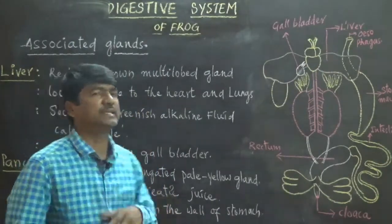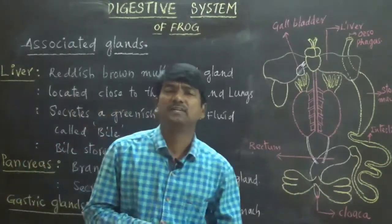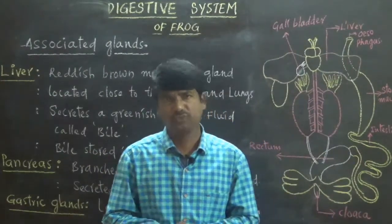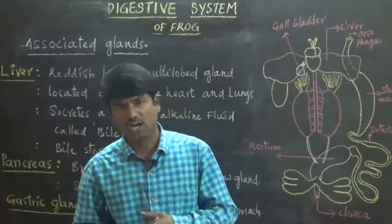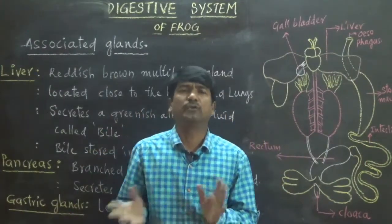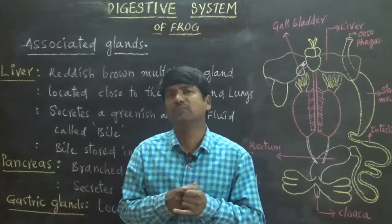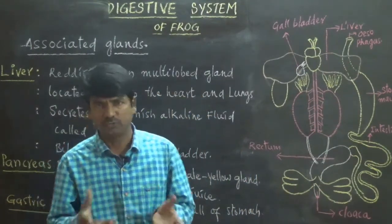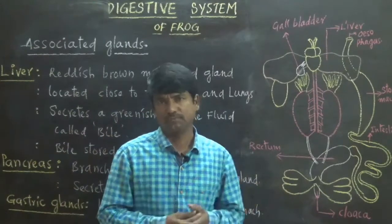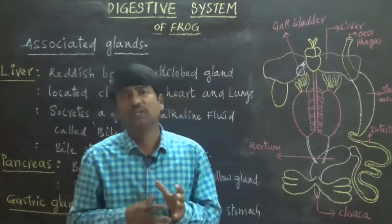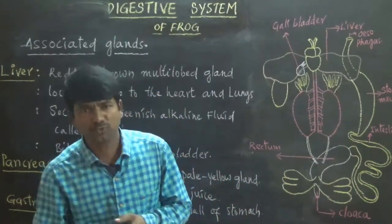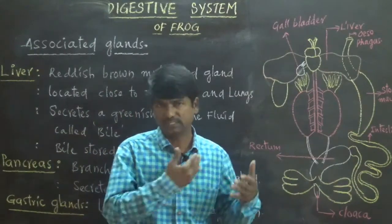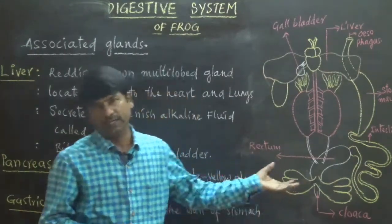Intestinal glands as well as gastric glands also participate in the production of enzymes and hormones to digest food molecules. Gastric glands are located on the wall of the stomach, whereas intestinal glands are located on the wall of the intestine. They produce enzymes and hormones when food comes into the intestine.